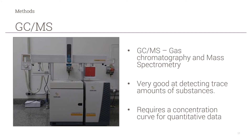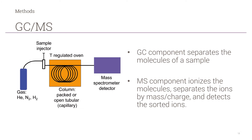The second piece of equipment I used to analyze the samples was GC-MS, or gas chromatography and mass spectrometry. Anyone who's a fan of the show Bones will recognize the GC mass spec as the go-to equipment to analyze crime scene chemicals. GC-MS is a great tool to detect trace amounts of substances, but significant quantitative work generally requires building a concentration curve. Very briefly, GC-MS uses the GC component to separate the molecules of a sample, while the MS component ionizes the molecules, separates the ions by mass and charge, and detects the sorted ions.